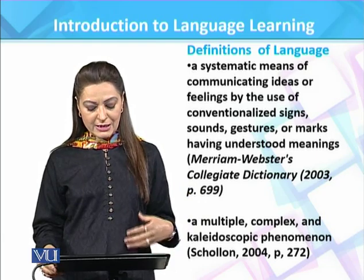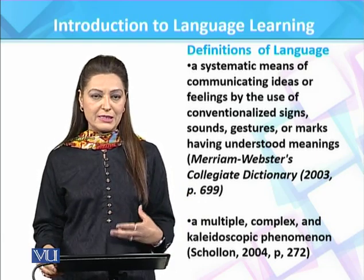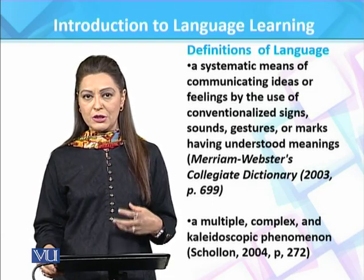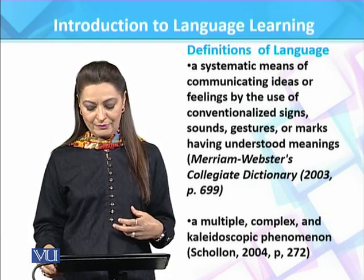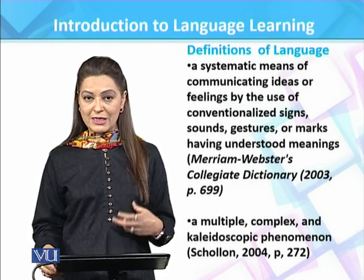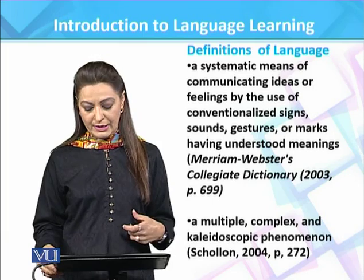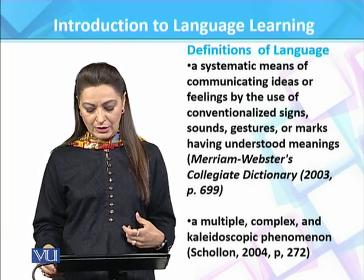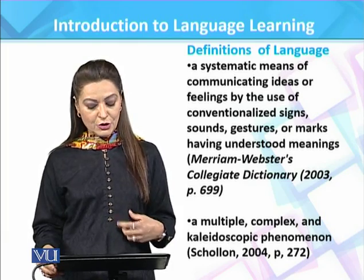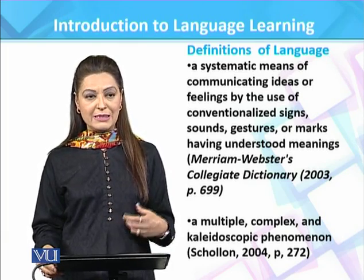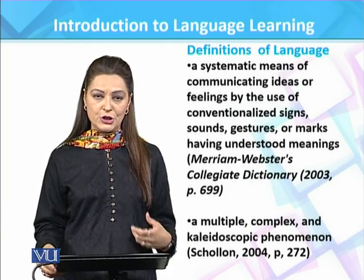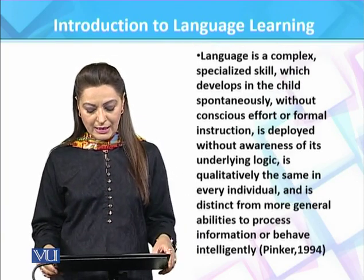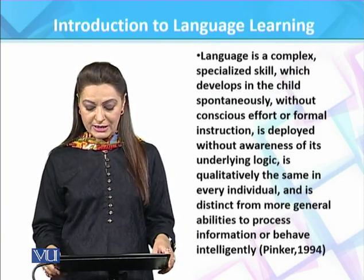Language is a multiple, complex, and kaleidoscopic phenomenon. This is another definition given by Xcolon. It is multiple in that it functions on different levels. Language has creativity and productivity, making it complex because of its structural elements. It is kaleidoscopic, which means it is dynamic and has the ability to change from situation to situation.